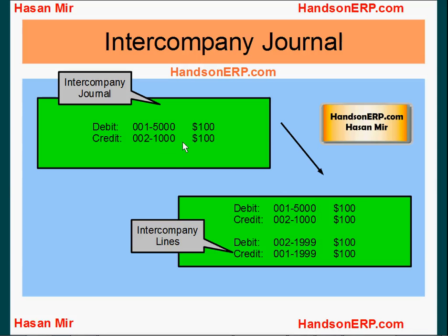You can enter an intercompany journal in the system, but you cannot post it until the journal is balanced by company. Intercompany lines have to be added in the journal to make it balanced by company. The journal has to be balanced as a whole — meaning total debits must equal total credits — and also this must be true for each company within the journal.